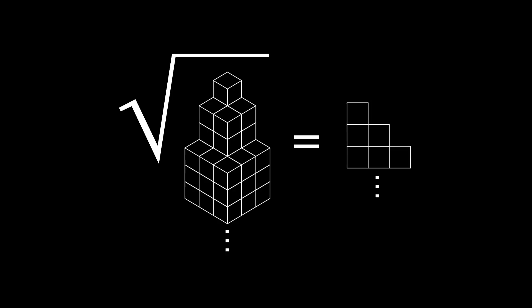This shows that the square root of the sum of the first n cubes is in fact equivalent to the nth triangle number.